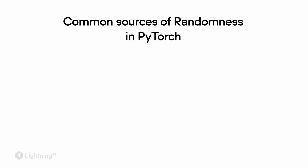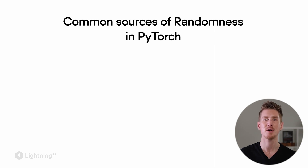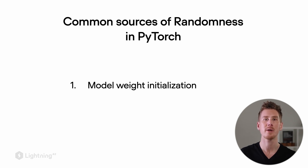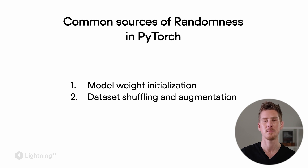The same concept of a random number generator and a random number seed also applies to PyTorch. When we work with PyTorch, there are several places where randomness occurs. One of these is model weight initialization — in the previous unit, we talked about initializing the model with small random weights, so this is one source of randomness. If we don't set the random seed, we will get different small random numbers each time we initialize the weights. Another source of randomness is data shuffling: if we use a different random seed, the shuffling may differ and the model might train slightly differently.